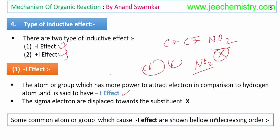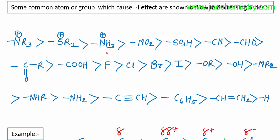Some groups that cause negative inductive effects are shown in decreasing order of inductive effect strength. We must remember this order because most exam questions related to inductive effects will ask which group has a higher or lower inductive effect. This order is very important and must be memorized — without knowing this trend you cannot answer exam questions.